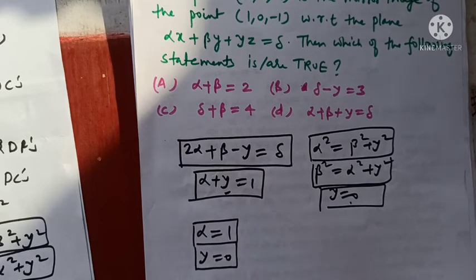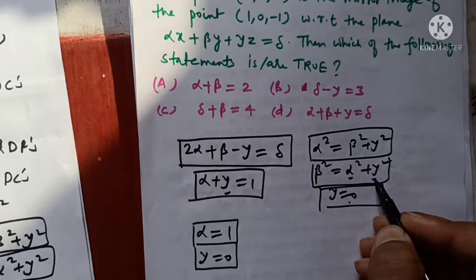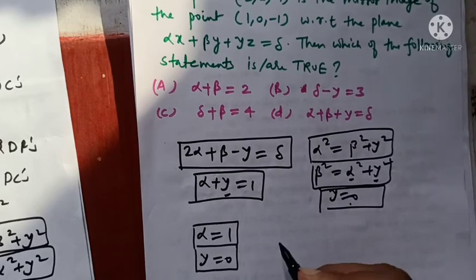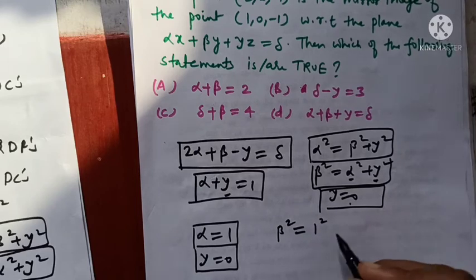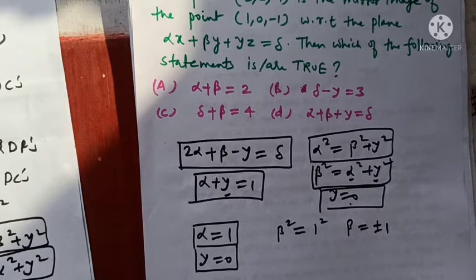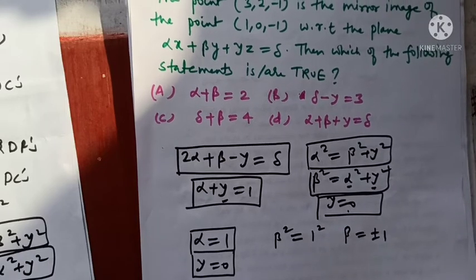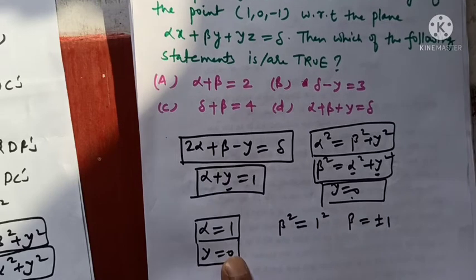With alpha = 1 and gamma = 0, we substitute into equation (4): beta² = alpha² + gamma² = 1² + 0 = 1. So beta = ±1. We now have two possible values for beta: +1 and -1. So alpha = 1, gamma = 0, and beta = ±1. Now only delta remains to be found.